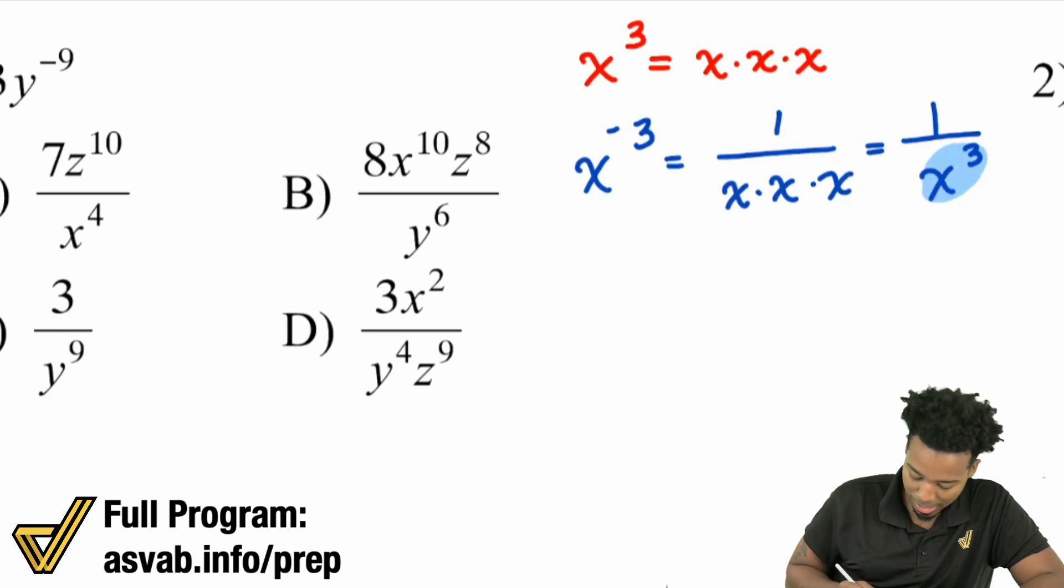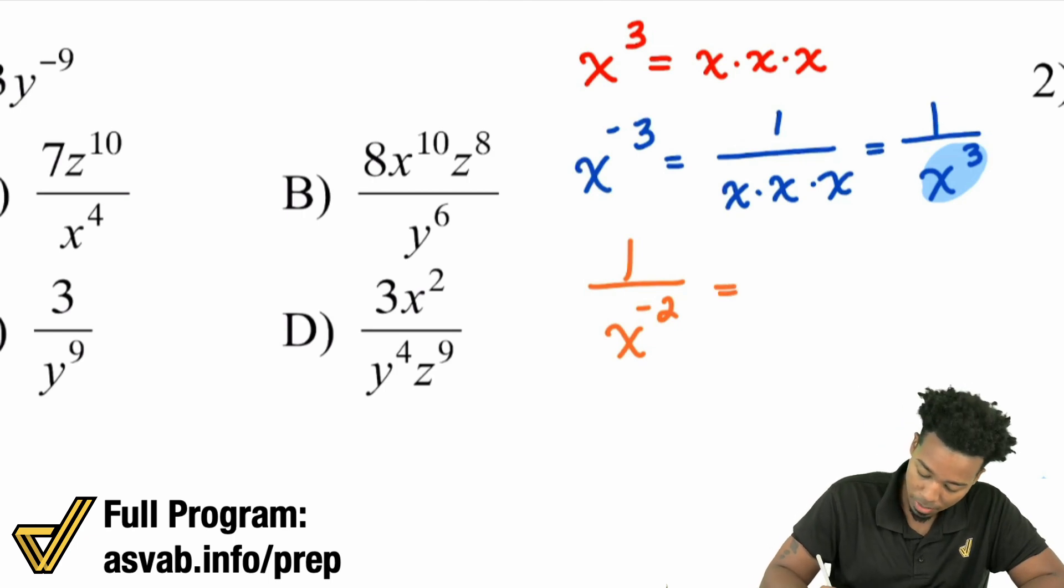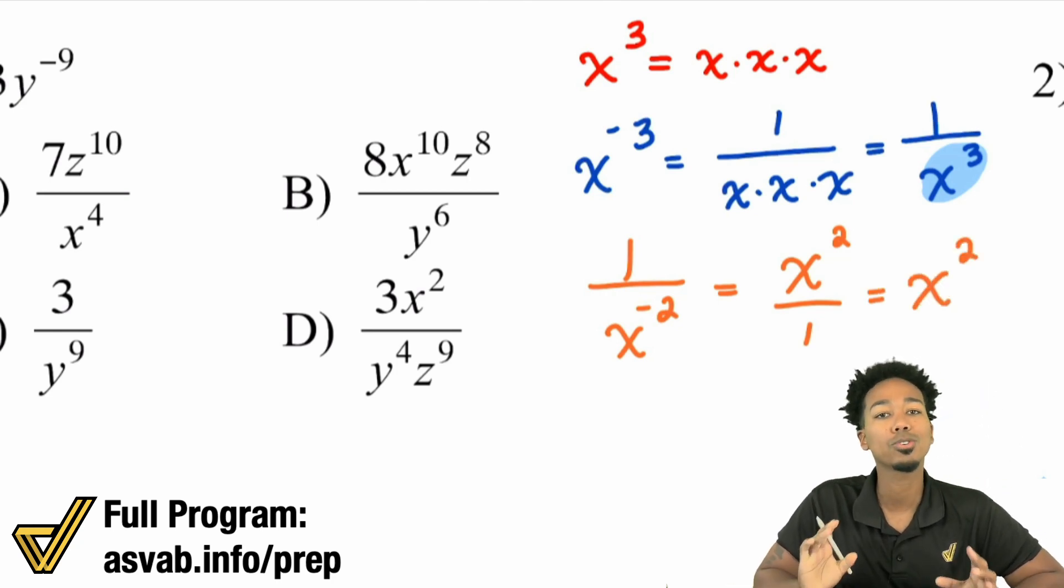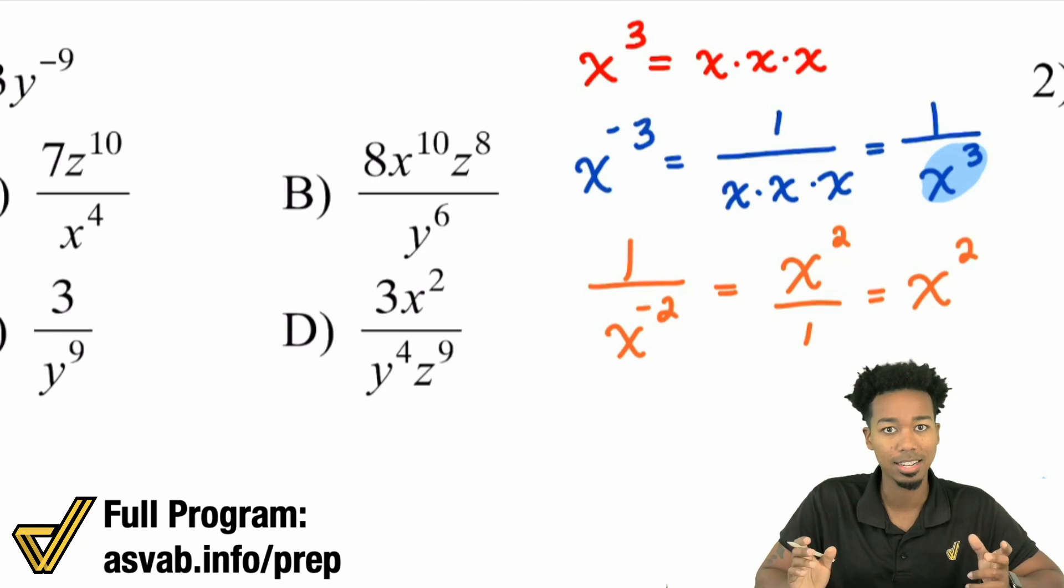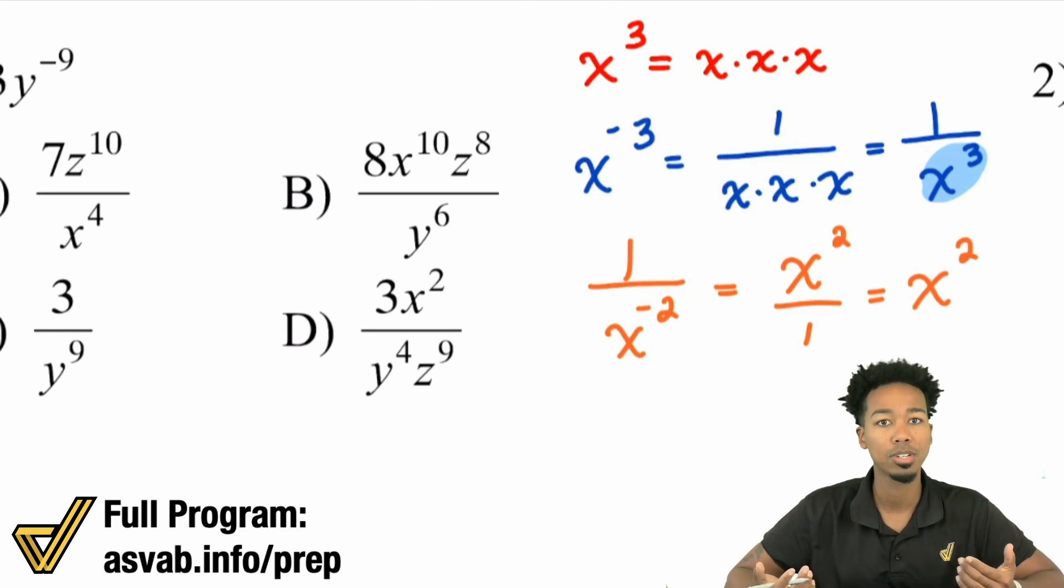But if you have, let's say something like one over, let's say x to the power of negative two, where you have an exponent that's negative, well, guess what, to make it a positive, you would just write it as x squared, you can say x squared over one, which is the same thing as saying just x squared. But long story short, the rule for handling negative exponents, everybody is this, wherever that specific piece is, that's a negative exponent, switch it between the numerator and denominator to make it positive.